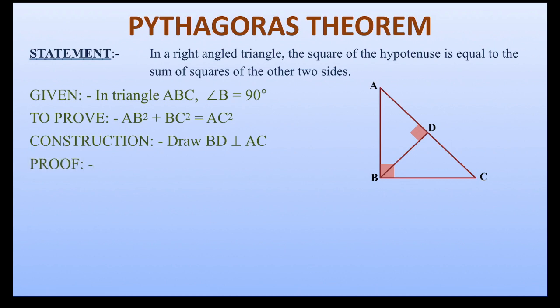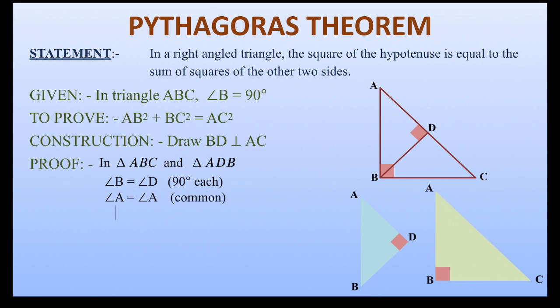In the proof, in triangle ABC and triangle ADB, that is the entire triangle and the upper part of the main triangle, we can see that angle B and angle D are 90 degrees each and angle A is a common angle. So, triangle ABC is similar to triangle ADB by AA similarity rule.